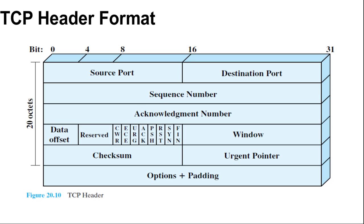The checksum is the ones complement of the ones complement sum of all the 16-bit words in the segment plus the pseudo header. Then urgent pointer, 16-bit: this value when added to the segment sequence number contains the sequence number of the last octet in a sequence of urgent data, allowing the receiver to know how much urgent data is coming. Last, options plus padding (variable): an example is the option that specifies the maximum segment size that will be accepted.